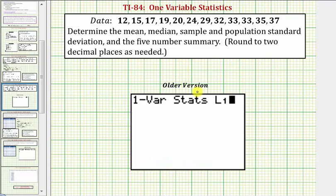Using the older version of the 84 or the 83, once you select the one-var stats tool, if the data set is in L1, since L1 is a default, we can simply press ENTER. Or we can enter L1 indicating where the data is located, and then we would press ENTER.